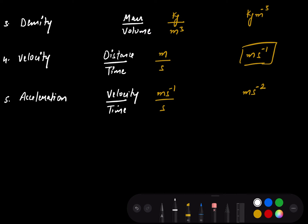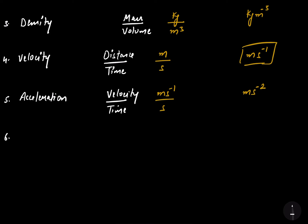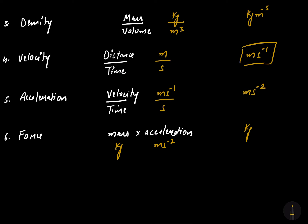The sixth physical quantity is force. The formula for force is mass into acceleration. The unit of mass is kilograms and the unit of acceleration is meter per second square, so the derived unit for force comes out to be kilograms meters per second square.